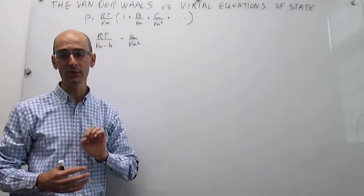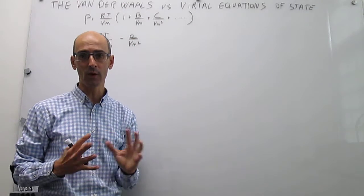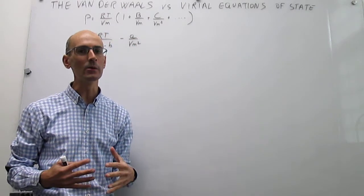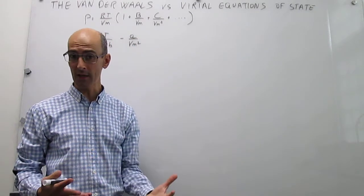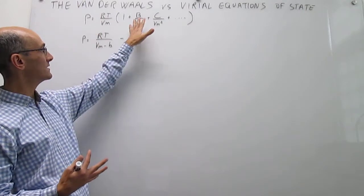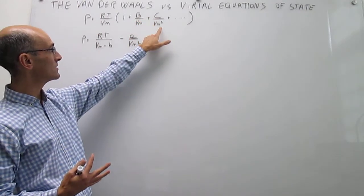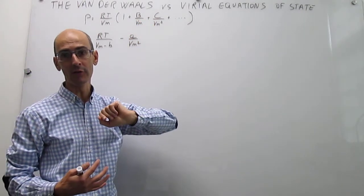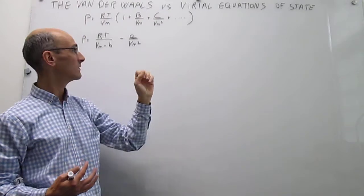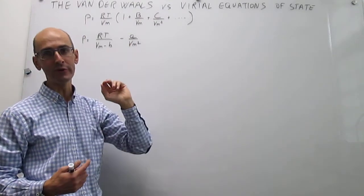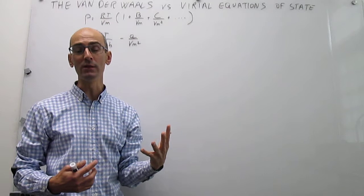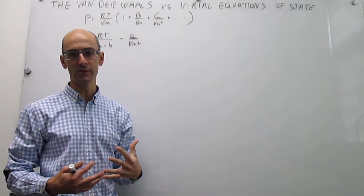Here are those two expressions, and the question we try to answer in this video is whether they are connected — whether we can take the Virial coefficients that appear in the Virial Equation of State and connect those with the a and b parameters in the Van der Waals Equation of State.